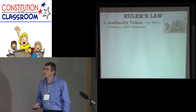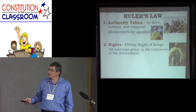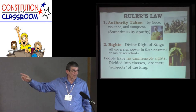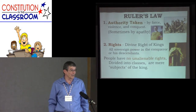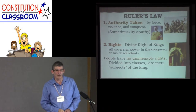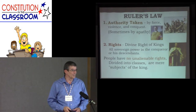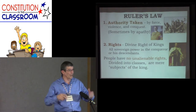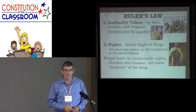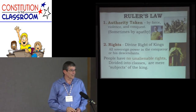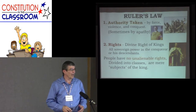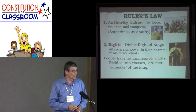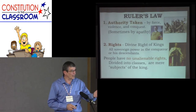Whenever you see these things, you can be sure that ruler's law more so than rule of law is being followed. Ruler's law always comes to pass by force, violence, and conquest, or rarely but it can happen by apathy. How do we fit here in America today? We've had a few riots here and there, but no sweeping violence or conquest yet. But we certainly have had a lot of apathy, and that allows unrighteous rule of kings to supplant the rule of law when we become apathetic and not involved.